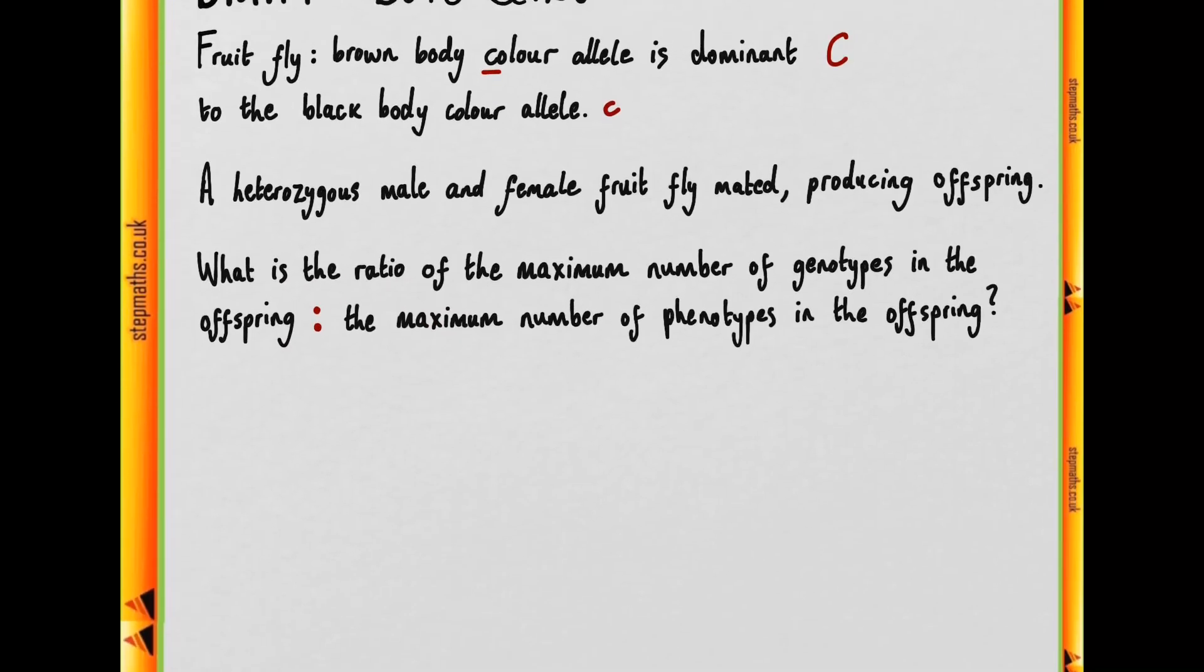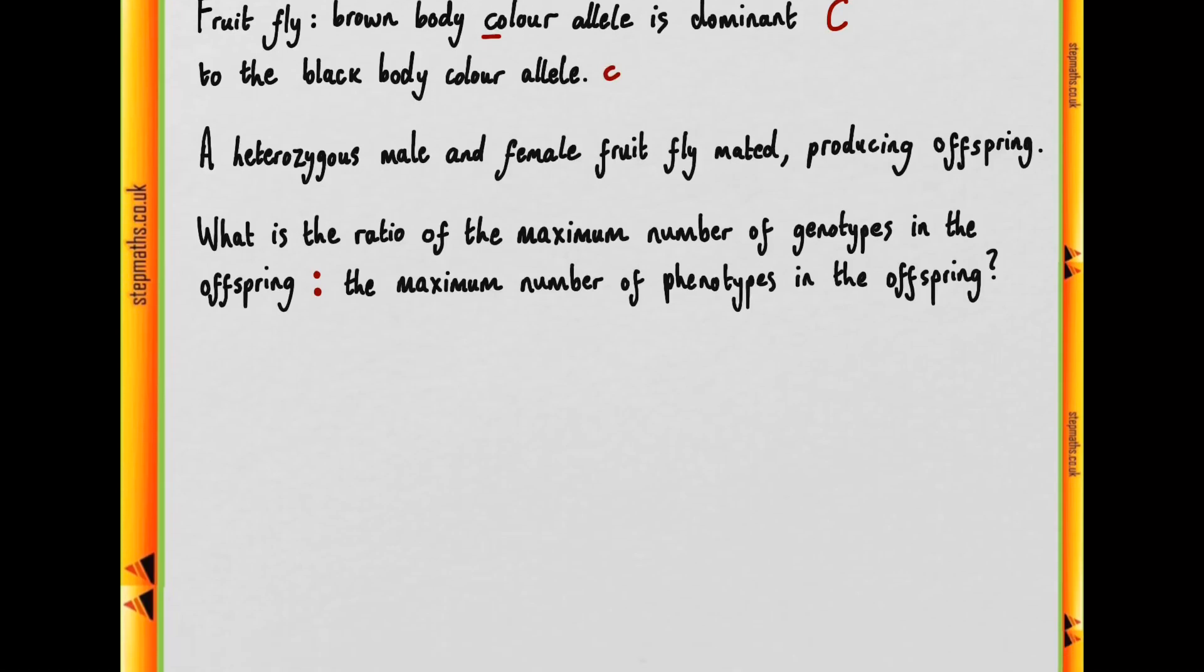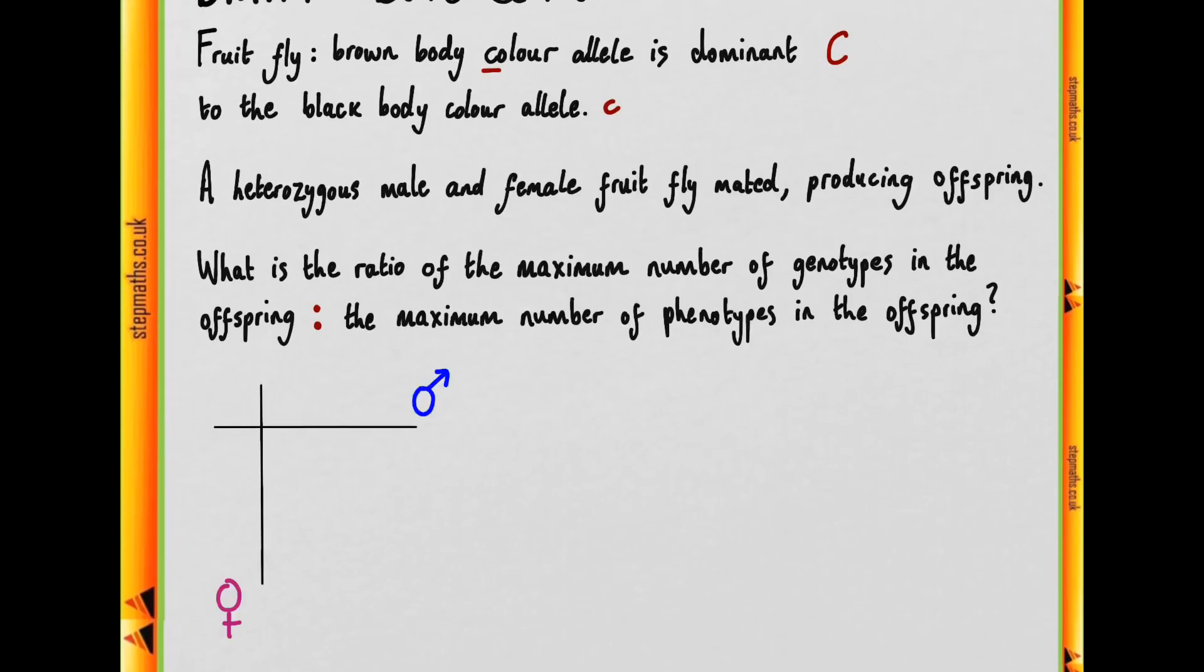The best way to do this is to do a genetic cross using a Punnett square. We have our cross between the mother and the father, and they're told they're both heterozygous, and that means they all have the genotype Cc, capital C, lowercase c.